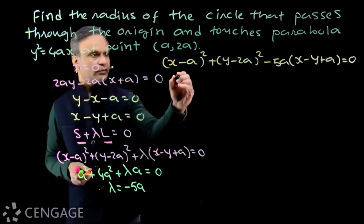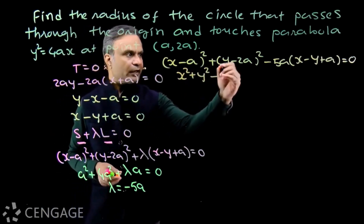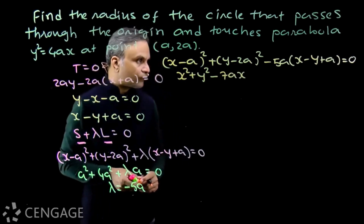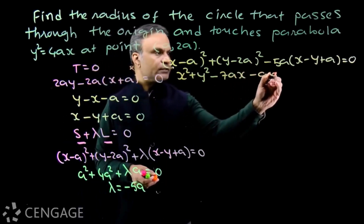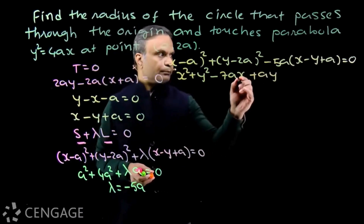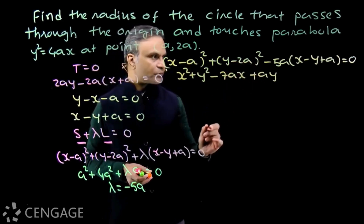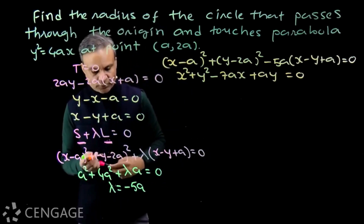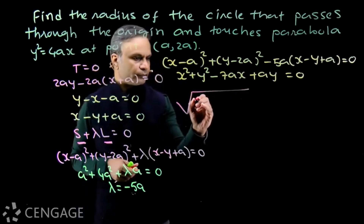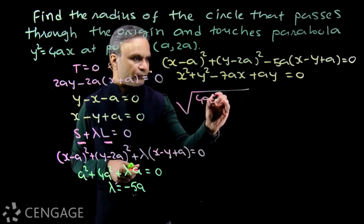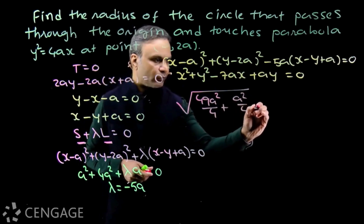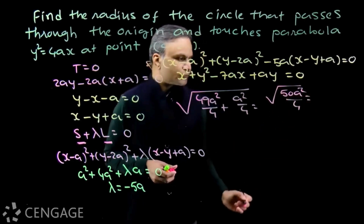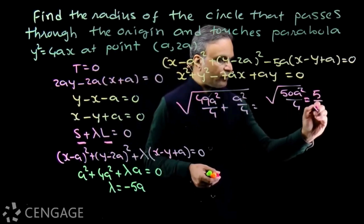From this equation we can find the radius. Expanding into general form, we get: x² + y² - 7ax + ay = 0. Since the circle passes through the origin, the constant term is zero, confirming this. The radius is √(49a²/4 + a²/4) = √(50a²/4) = 5a/√2. So the radius of the required circle is 5a/√2.